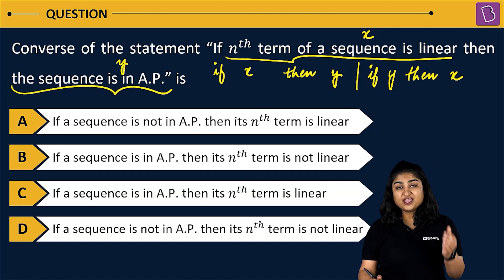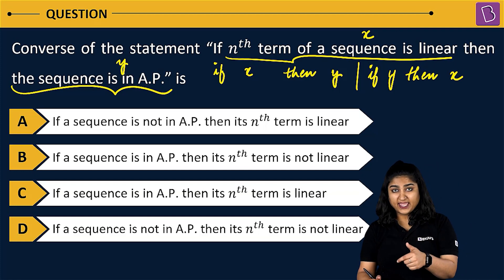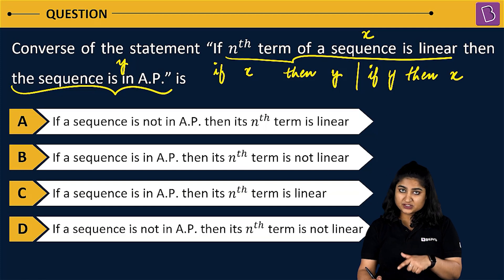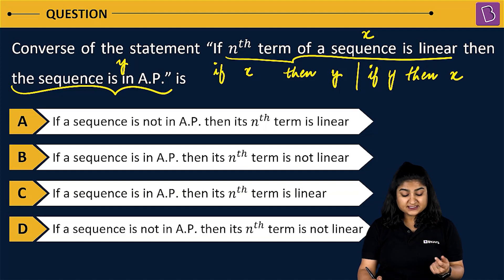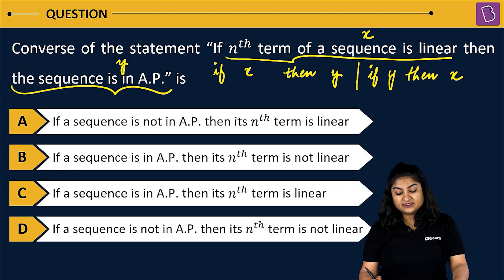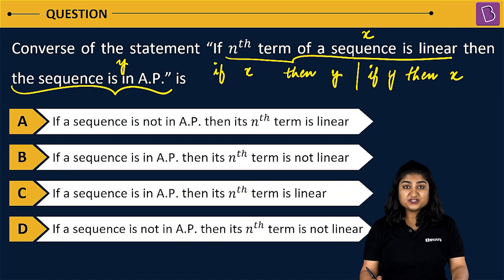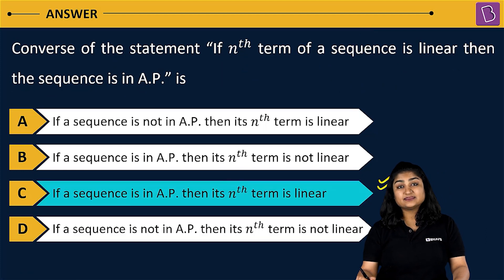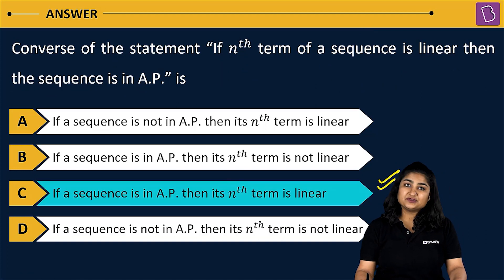So we have if X then Y, and the converse of if X then Y would be if Y then X. Therefore, the converse of the given statement would be: if a sequence is in AP, then its nth term is linear. This has been given in option C, hence the correct answer to this question is option C.